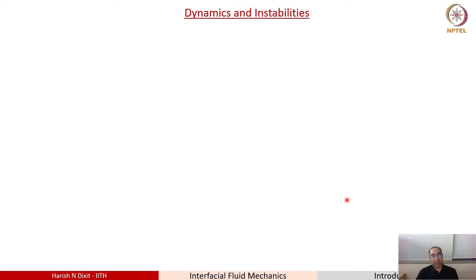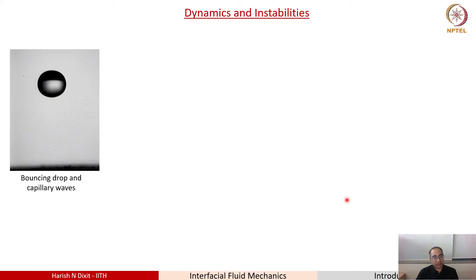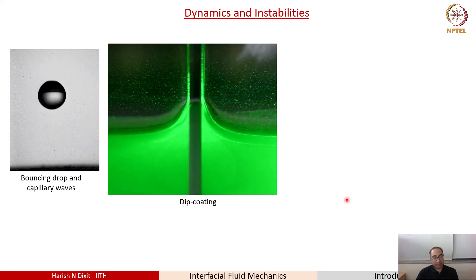Then we'll look at topics such as dynamics and instabilities. Here I'm showing you a droplet that is basically coming down, descending down. And in the process, it basically wobbles, meaning its shape is continuously changing. And then it hits a surface and can exhibit capillary waves.